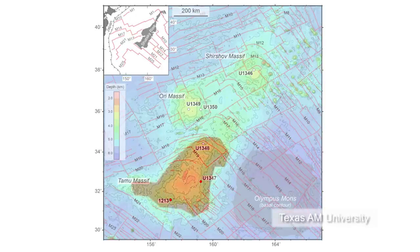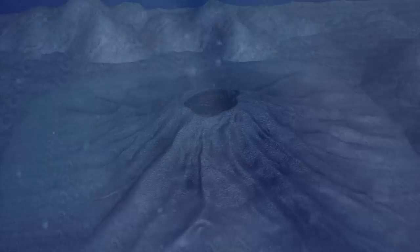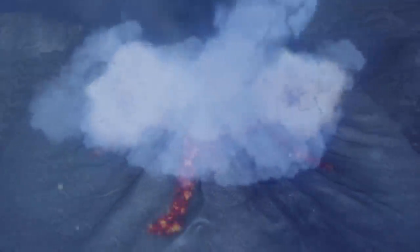A recently discovered volcano could be the second largest in our solar system. Tamu Massif is an extinct shield-type volcano 1,600 kilometers east of Japan.